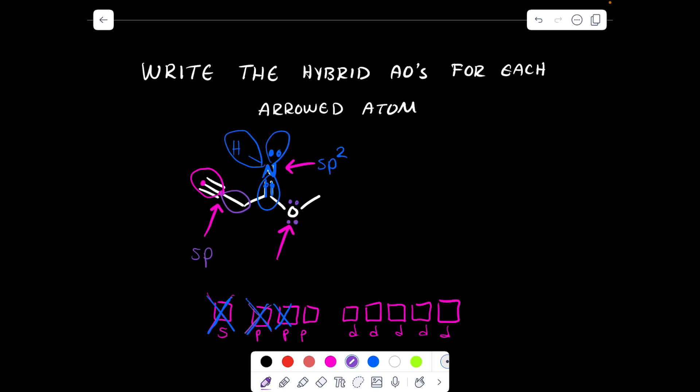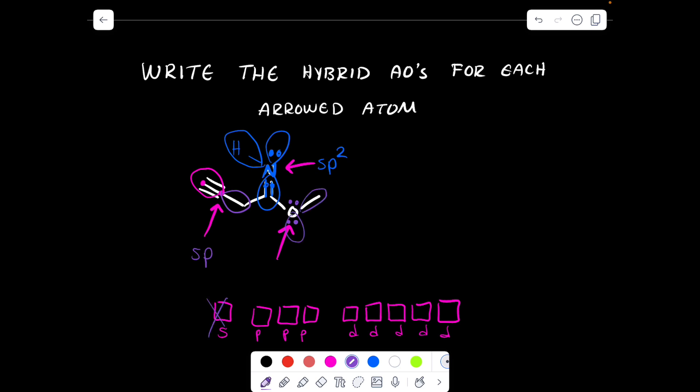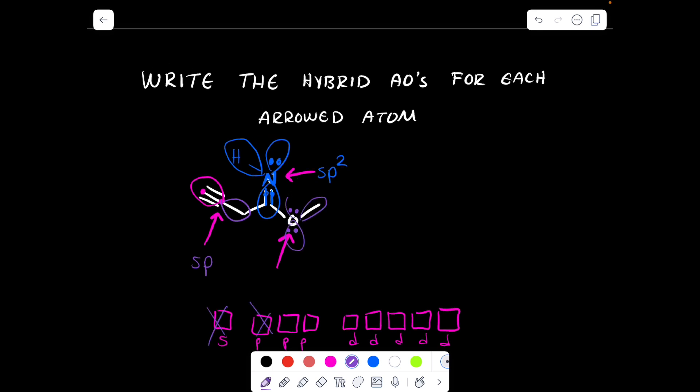So this oxygen, to have a neutral formal charge, would need two sets of lone pairs. So if we do the box method again, so each area to another atom is a bonding region, and each lone pair is a bonding region. So this would be one bonding region, cross out a box. This would be another bonding region, cross out a box. One more bonding region, cross out a box, and one more bonding region, cross out a box. So this would be sp3.